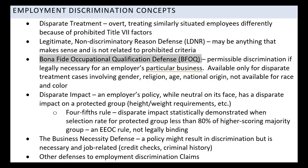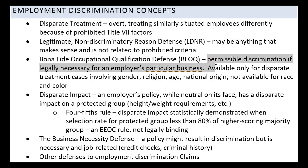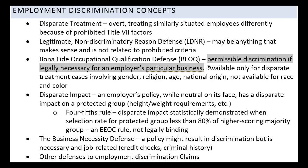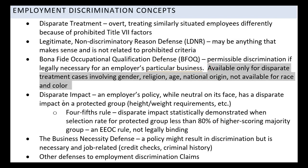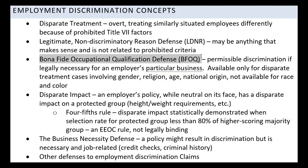Another defense is called the Bona Fide Occupational Qualification defense, or BFOQ. These are pretty rare, but if I can successfully argue for a BFOQ it's because something about the job is so particular that it allows me to discriminate in a way I otherwise could not. It's not available for every protected class but is perhaps available for gender, religion, age, and national origin. It's not available for race or color. An easy example of a BFOQ: if I have a restaurant and I'm hiring a bathroom attendant, it's reasonable to want that attendant to be the same gender as the bathroom they'll be working in.